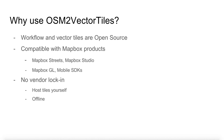You can get vector tiles from commercial providers such as Mapbox, but not everyone can depend on a third party. OSM to Vector Tiles is an alternative for all those who want true open source vector tiles and complete control over the data.